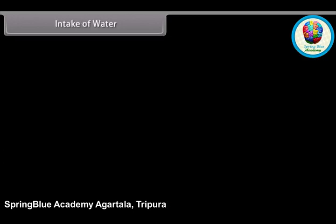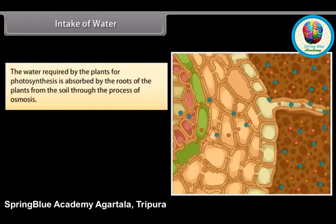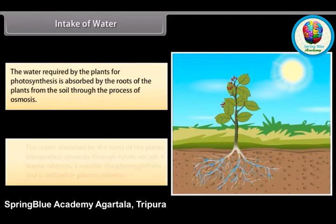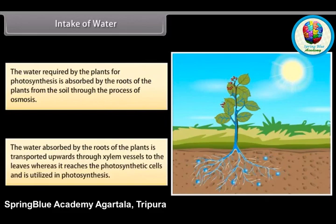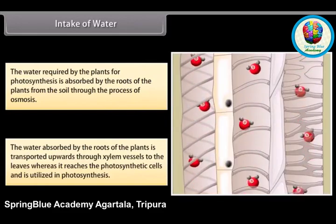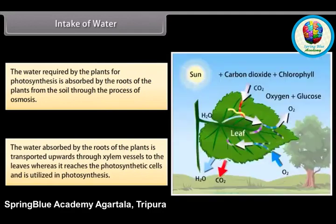The water required by plants for photosynthesis is absorbed by the roots from the soil through the process of osmosis. The water absorbed by the roots is transported upwards through xylem vessels to the leaves, where it reaches the photosynthetic cells and is utilized in photosynthesis.